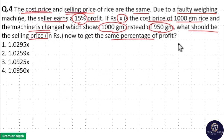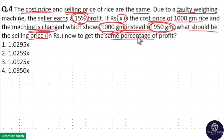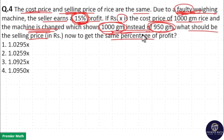In the first case, CP and SP are the same, and due to this faulty weighing machine, the seller earns 15% profit. In the second case, the machine is changed — when you weigh 950 gram, the machine shows 1000 gram. The 1000 gram and 950 gram are the faulty readings in the second case. In the first case, the faulty reading is not given. So because of that certain faulty reading, the seller earns 15% profit since cost price and selling price were the same. In the second case, we have to equalize the profit, and since the machine reading is changed, we have to change the selling price in the second case.